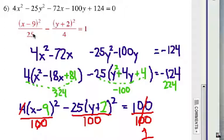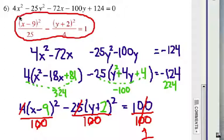And I can factor out a 25, and it leaves me with the 4 underneath the y group. So, final answer. The equation of this hyperbola looks like this.